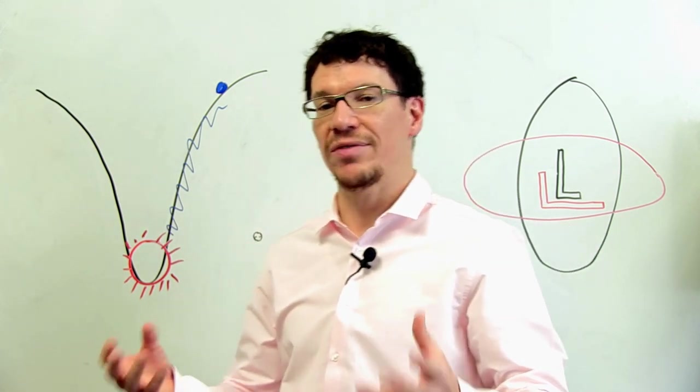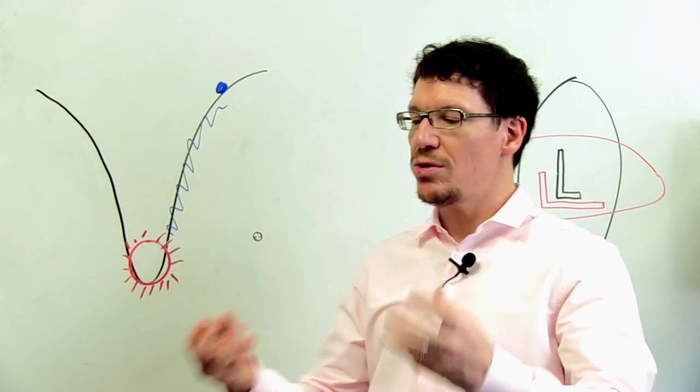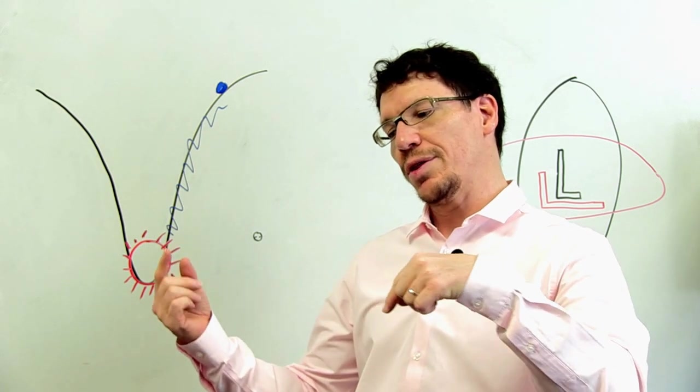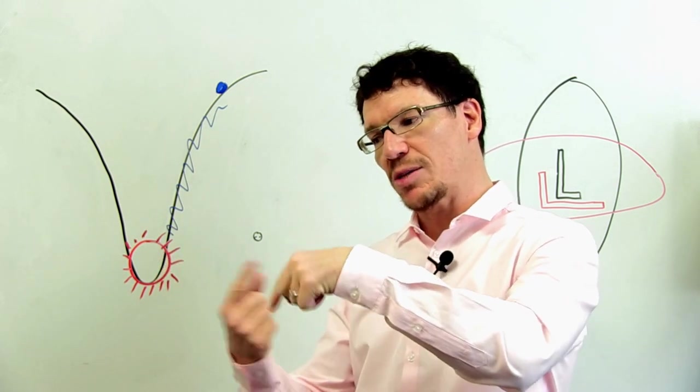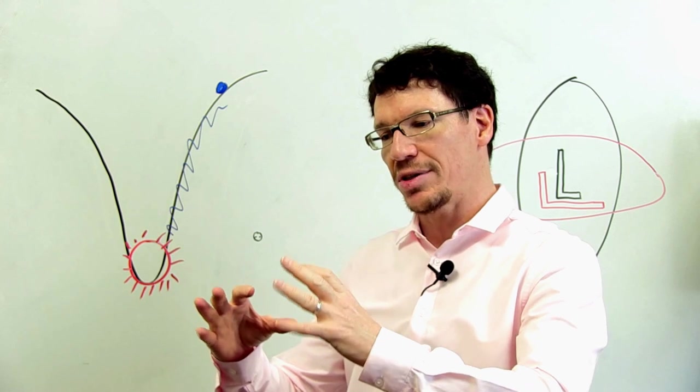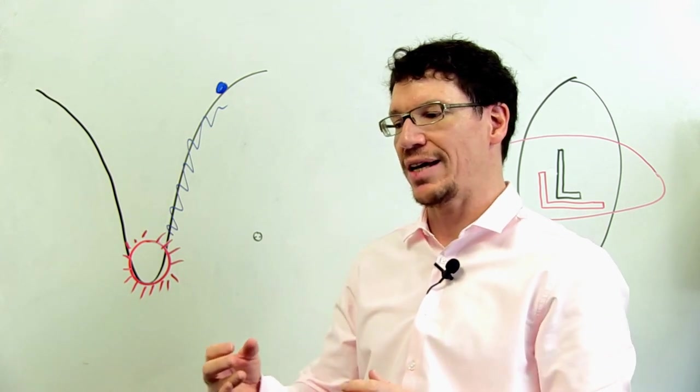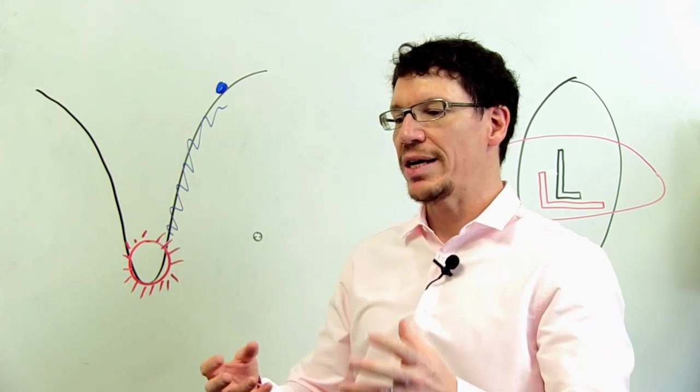Now in the last fraction of a second we have these two objects with decaying orbits, orbits getting smaller and smaller. They're getting closer and closer together. And in the last fraction of a second they are orbiting.